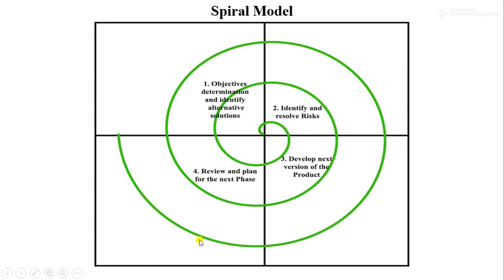This is all about the spiral model. In our upcoming videos, we are going to start the next chapter: requirement analysis and specification, including what different activities we need to carry out during requirement analysis, how to write SRS documents, and how to identify functional and non-functional requirements. Thank you.